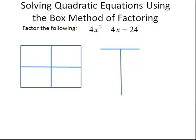We're asked to solve the given quadratic equation using the box method of factoring. What we're going to do is first get this set equal to zero.